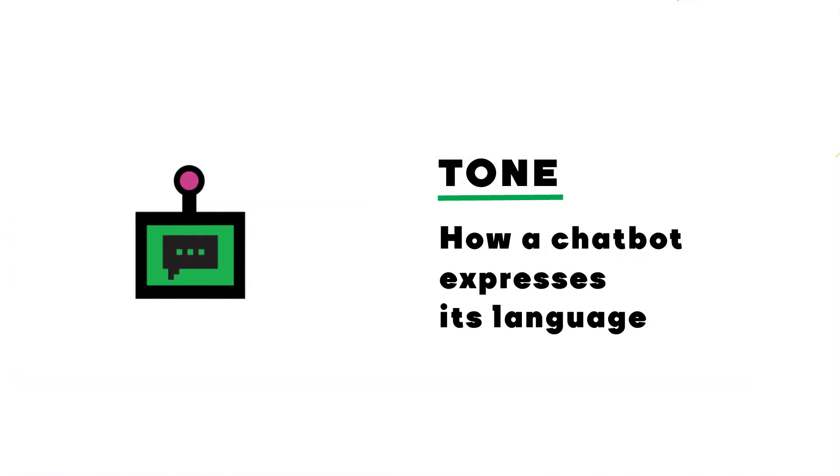A chatbot's tone is how your chatbot expresses its language in writing. It can be friendly, casual, humorous, emotional, personable, or all of the above. We recommend that you choose a tone that fits your chatbot's purpose. For example, if you're discussing movies, adding a touch of humor will probably work. However, if you're discussing mental health issues, you want to make sure that users are not put off by a chatbot that sounds too casual.